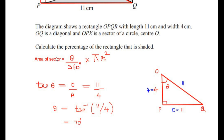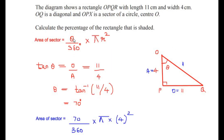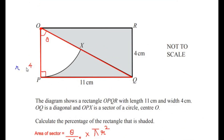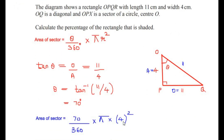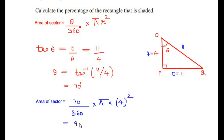Now let us substitute the value of θ into the area of sector formula. Substituting θ = 70 and r = 4, we get 70/360 × π × 4². Since 4² = 16, we calculate 70/360 × π × 16, which gives us an area of sector equal to 9.77 centimeters squared.